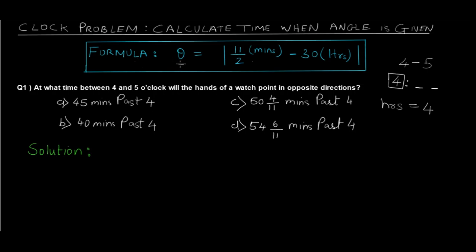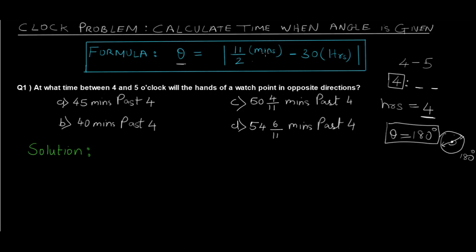In the formula we need three variables: theta, minutes, and hours. We want to calculate the minutes, and we already know hours = 4. The angle isn't directly stated, but 'opposite directions' means 180 degrees — it would look like a straight line across the clock. So now we have theta = 180° and hours = 4; we simply need to find the minutes.